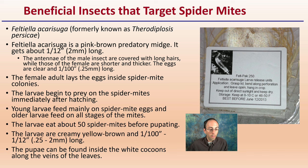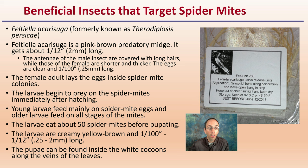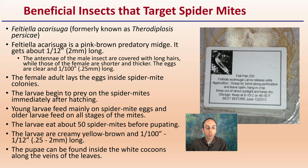Another beneficial insect is Feltiella, formerly known by a different name, so research both names. It's a pink-brown predatory midge that only gets about two millimeters long — about one-twelfth of an inch. The antennae of the male are covered with long hairs, while the female's are shorter and thicker. The female adult lays eggs inside spider mite colonies, and the larvae begin to prey on spider mites immediately after hatching. Young larvae feed mainly on spider mite eggs; older larvae feed on all stages of the mites. The larvae eat about 50 spider mites before pupating, and the pupae can be found inside white cocoons along the veins of the leaves.